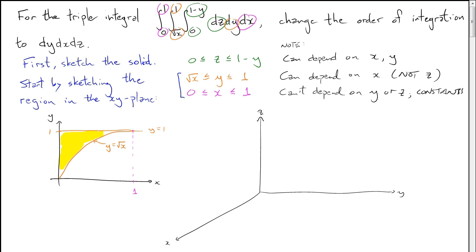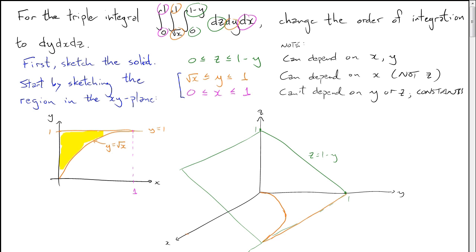Let me draw that region in 3-space in orange and fill it in yellow. Now our job is to sketch the upper and lower bounds for z. z can be as small as 0 — that's just the xy plane — so the bottom of the solid is those orange curves in the xy plane. The upper bound for z is 1 minus y. We draw the line z equals 1 minus y, and stretching it along the x axis gives the plane z equals 1 minus y, since it doesn't depend on x.